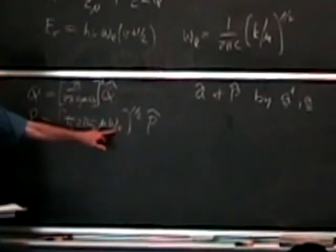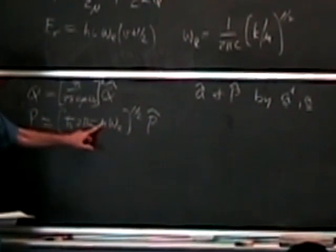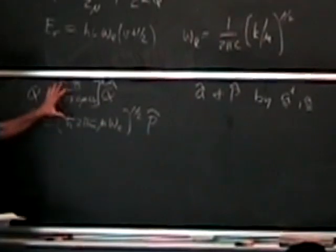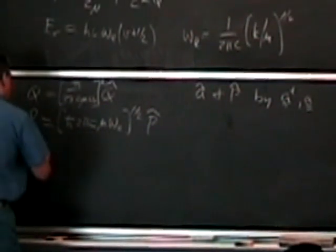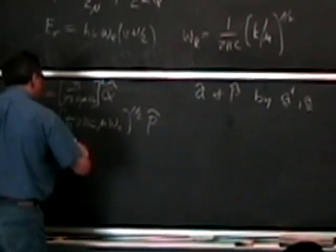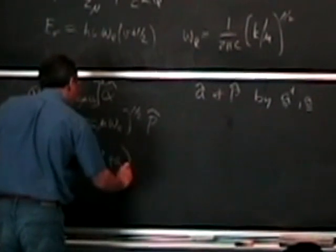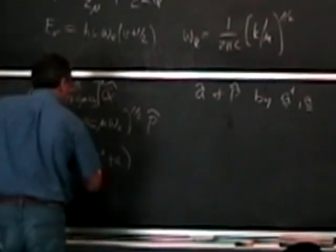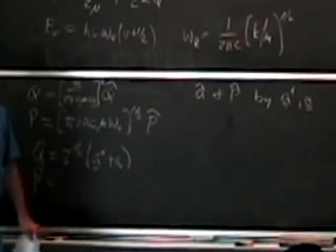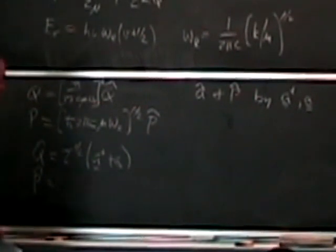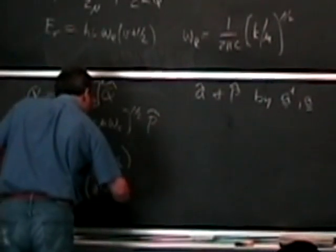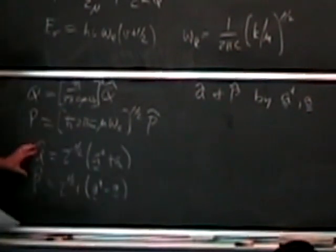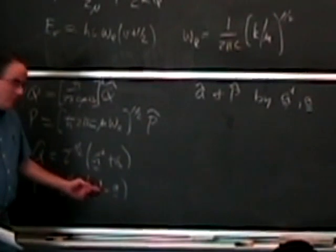The specific characteristics — the mass, frequency, force constant, reduced mass — they're in the pre-factors. Then we can write q̂ = (1/√2)(a† + a), and p̂ = (1/√2) · i · (a† - a). So we can write the dimensionless coordinate and the dimensionless momentum in terms of these universal factors.